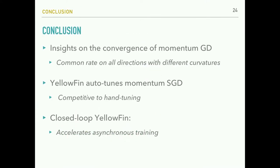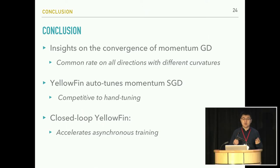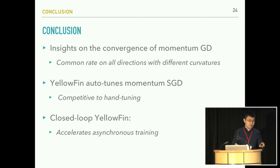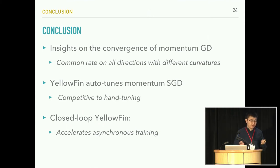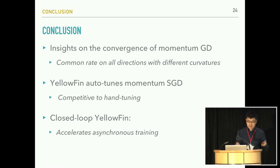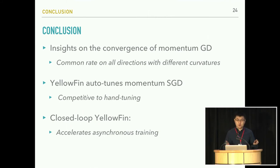Let me conclude the presentation. We discussed Yellowfin, an automatic hyperparameter tuner for momentum stochastic gradient descent. We went through the theoretical insights which guided our design, demonstrated how we can adapt those insights to design tuning rules for momentum SGD, and discussed a variant of the Yellowfin tuner which can accelerate asynchronous training. That's all for today's presentation, and I'm happy to take any questions. Thank you.